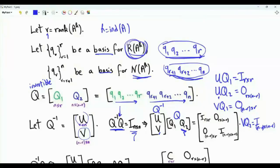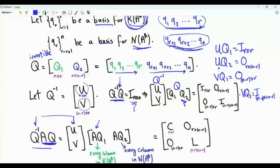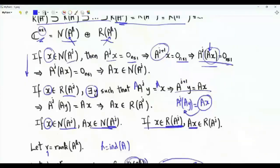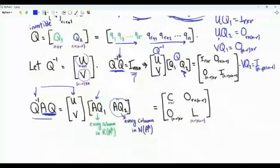Let's examine the quantity Q inverse times A times Q. Q inverse is partitioned into U and V. When we multiply A by Q, the first r columns are AQ1 and the remaining n minus r columns are AQ2. Recall our earlier results: if a vector is in the null space, A times that vector is also in the null space; and if a vector is in the range, A times that vector is also in the range. So we examine AQ1 and AQ2.